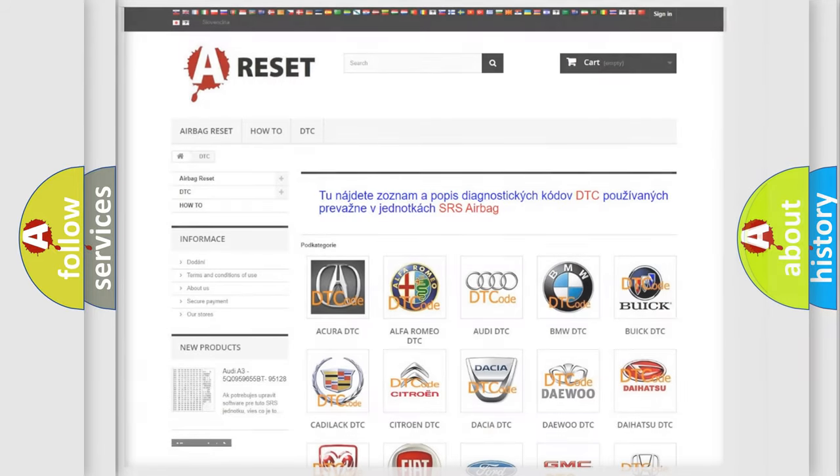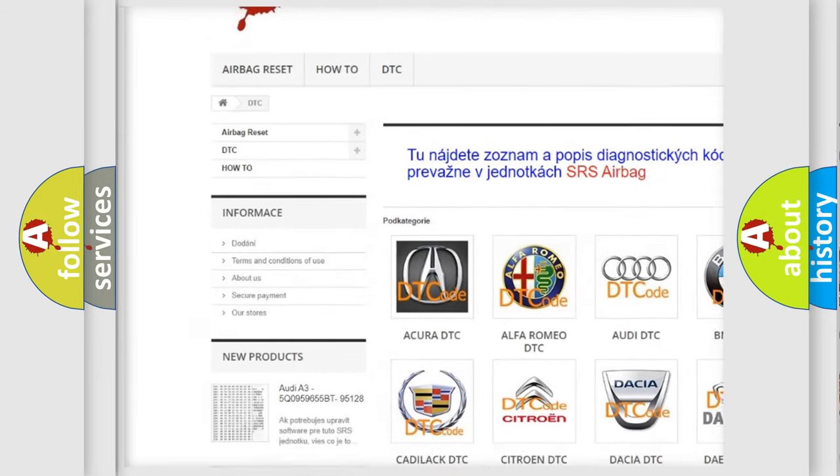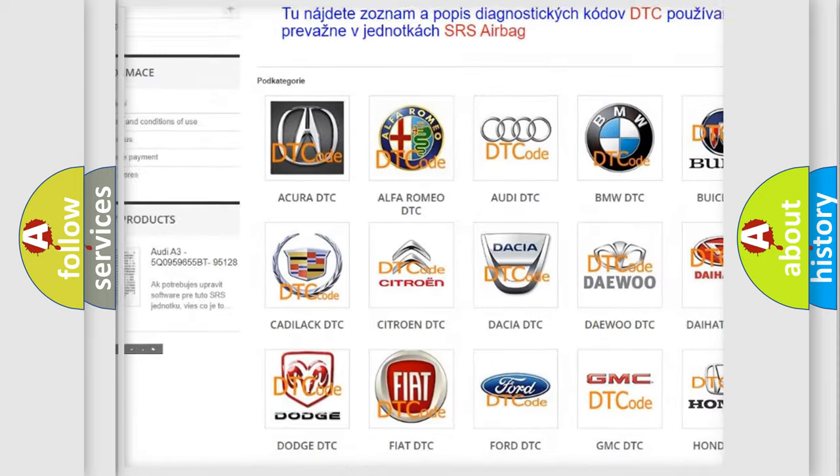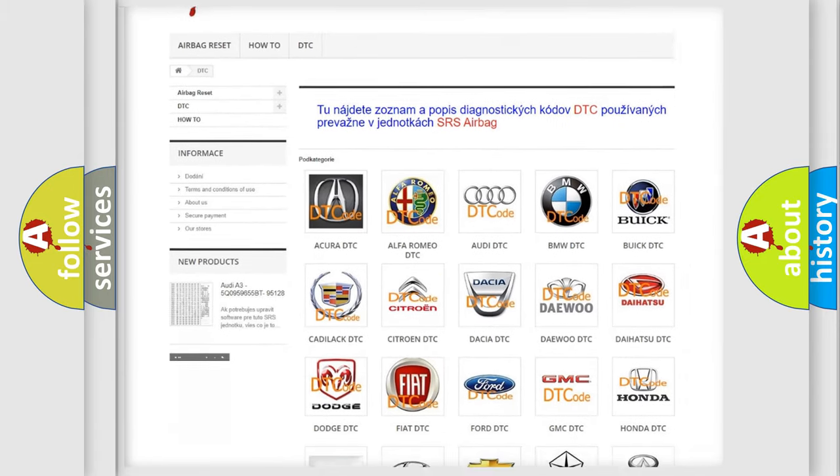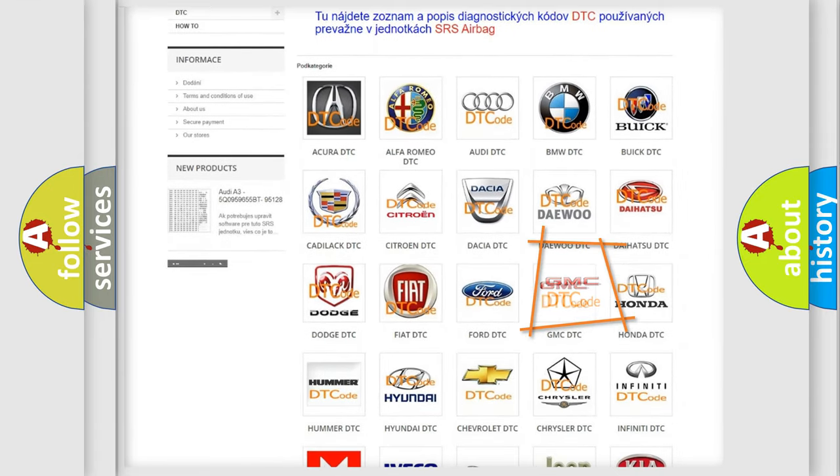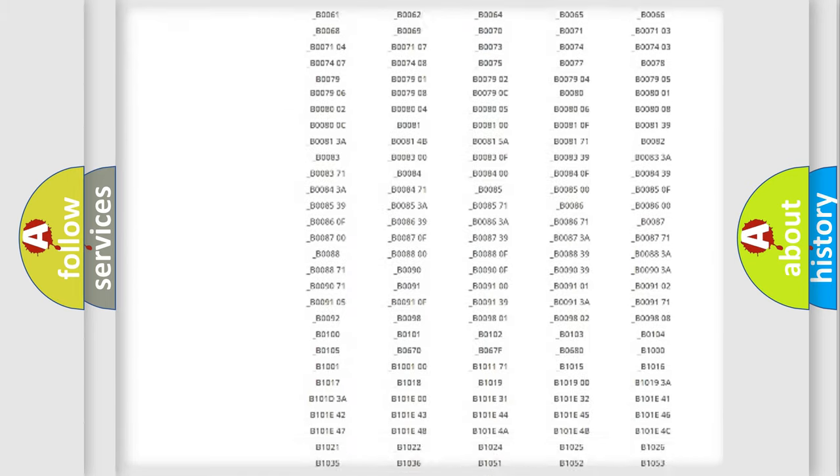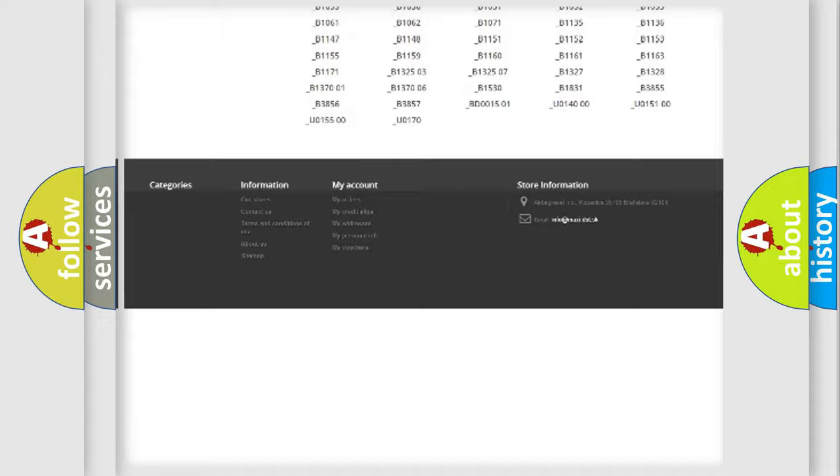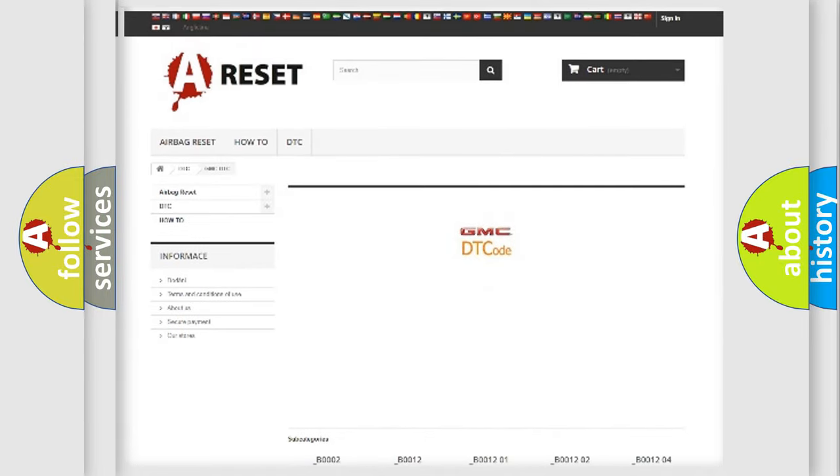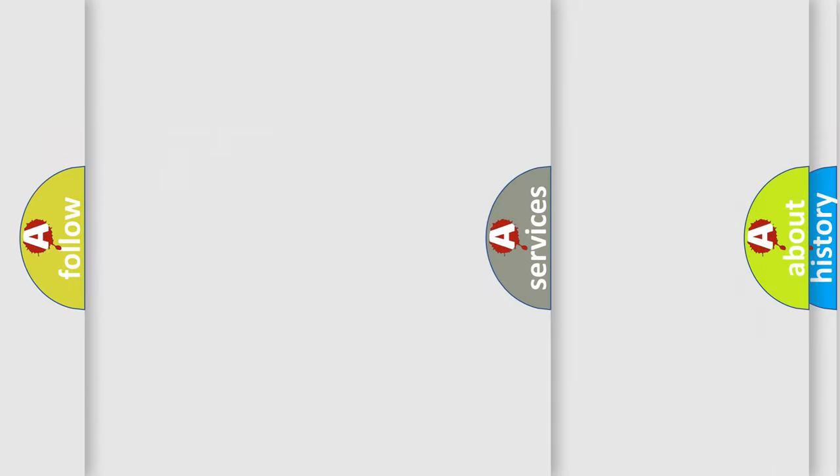Our website airbagreset.sk produces useful videos for you. You do not have to go through the OBD2 protocol anymore to know how to troubleshoot any car breakdown. You will find all the diagnostic codes that can be diagnosed in GMC vehicles. Also many other useful things.